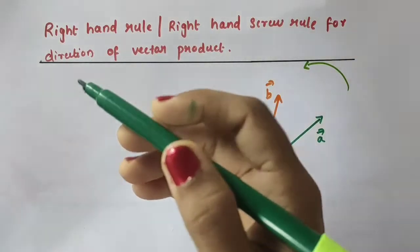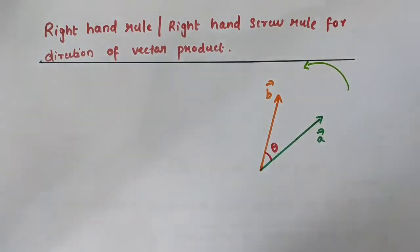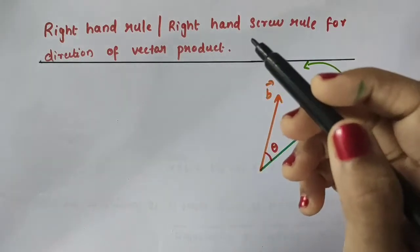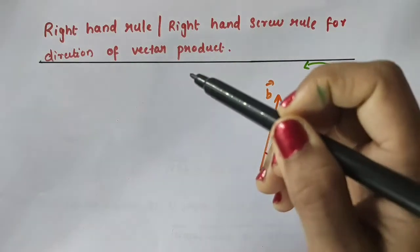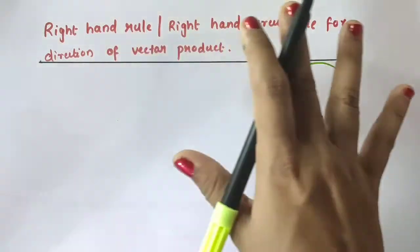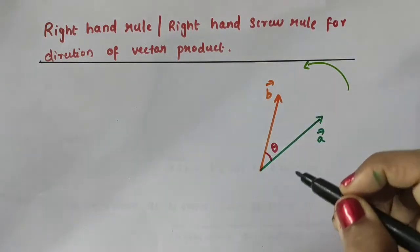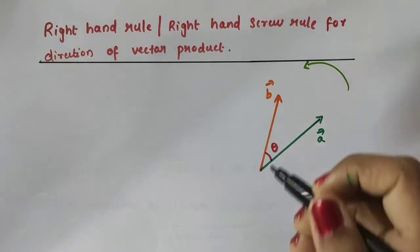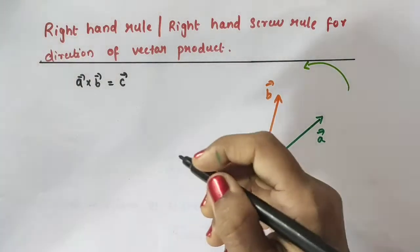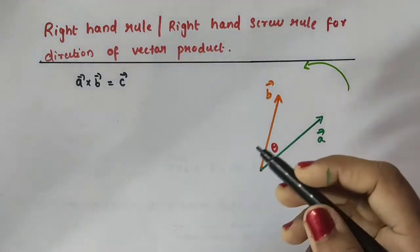In this video we are going to discuss the right hand rule and right hand screw rule for the direction of vector product. First, let us discuss the simpler version, which is the right hand rule. Consider two vectors, vector A and vector B, lying in the XY plane — the plane of this paper. The angle between vector A and vector B is given as theta. The vector product of the two vectors is again a vector, so vector A cross vector B equals some other vector, vector C. We are trying to find the direction of vector C.